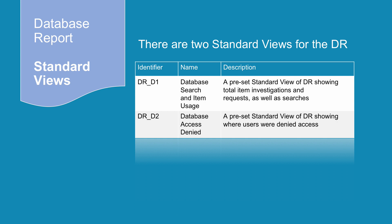DR-D1 is a database search and item usage report — a preset standard view of DR showing total item investigations and requests, as well as searches. DR-D2 is an access denied report. This preset standard view of DR shows where users were denied access because simultaneous use licenses were exceeded or their institution did not have a license for the database.